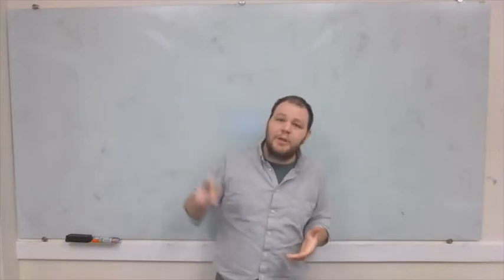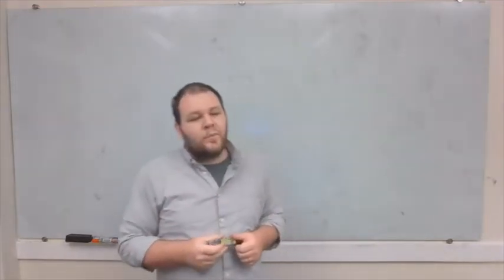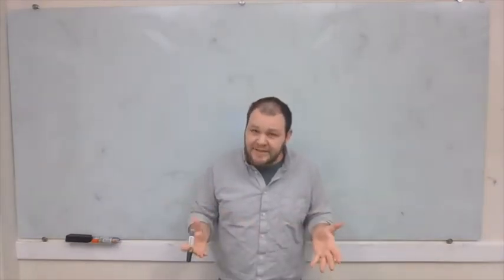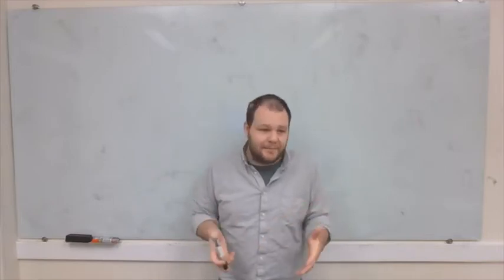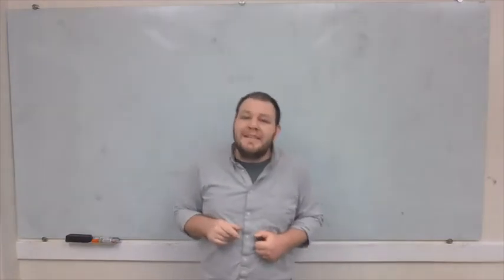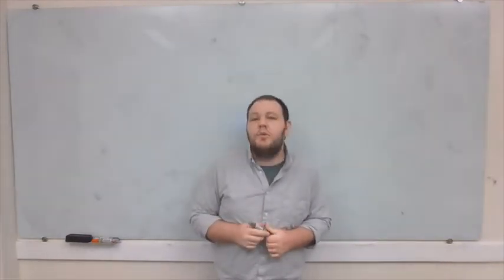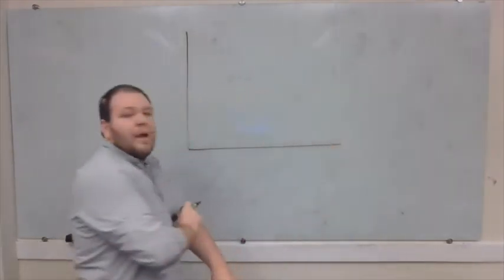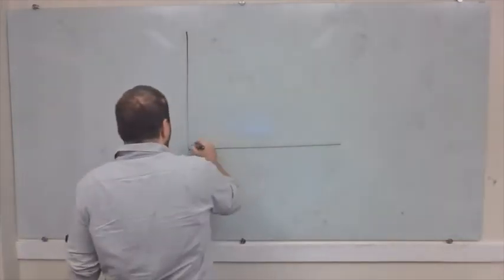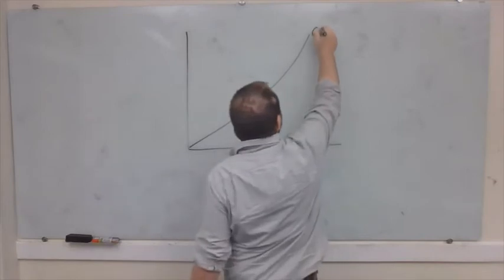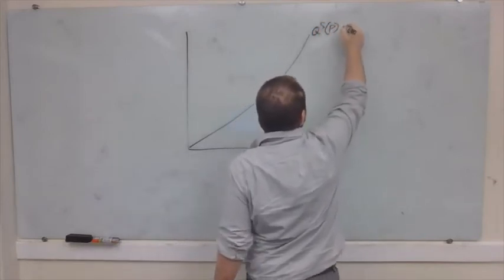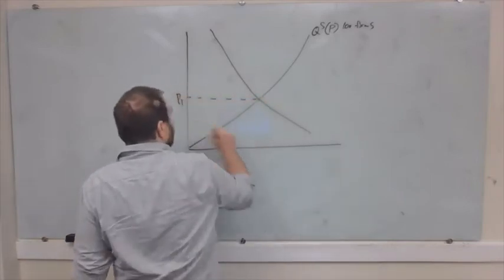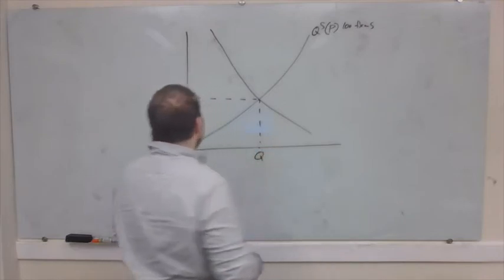Another reason we might have upward sloping supply curves in a long-run competitive equilibrium is that input costs might not be constant. As we increase the scale of production in the market, we might increase the costs of the inputs that firms need. To make this concrete, let's think about the market for dentistry. Let's say there are 100 dental firms in the LA area with a supply curve, a demand curve, and some equilibrium price P1 and quantity Q1. At P1, all 100 firms are breaking even — the amount they pay to hire dentists, hygienists, and offices exactly equals their average total costs.